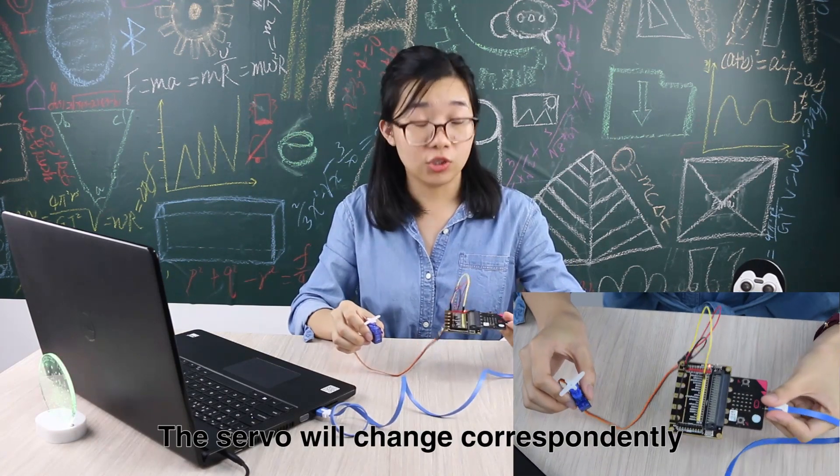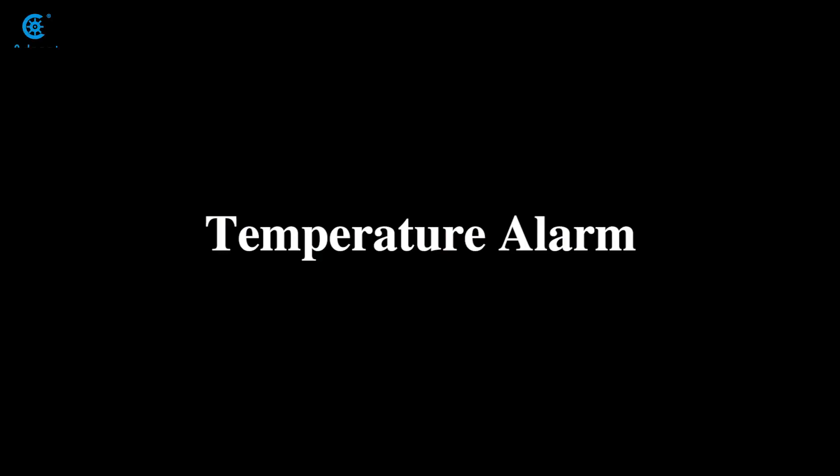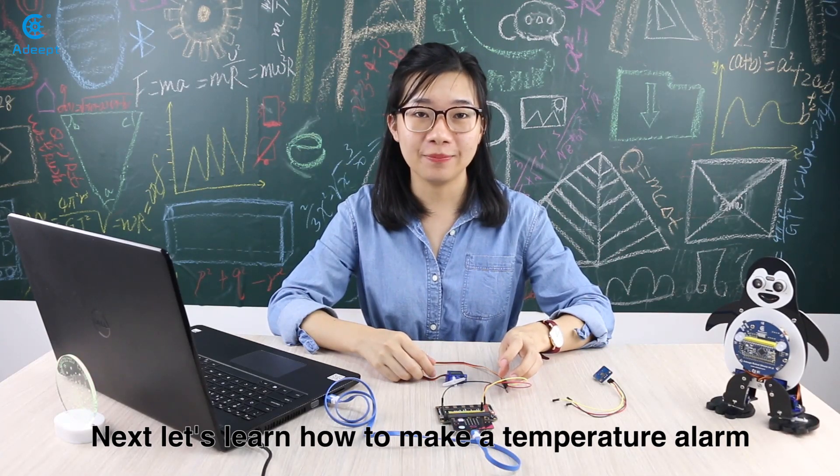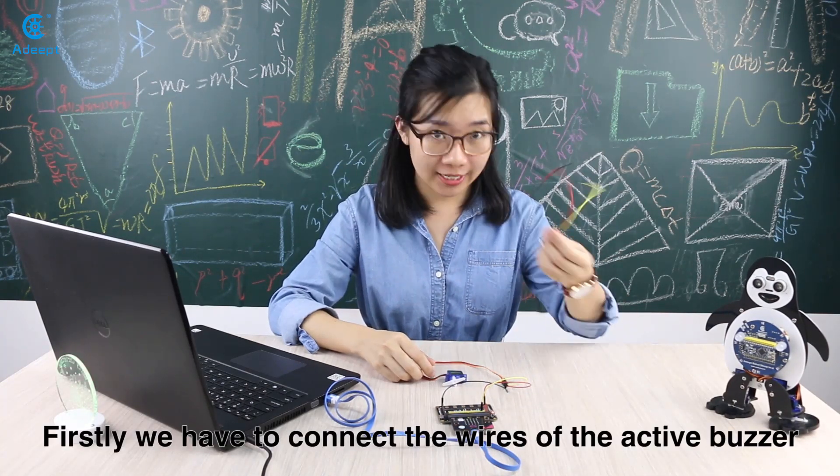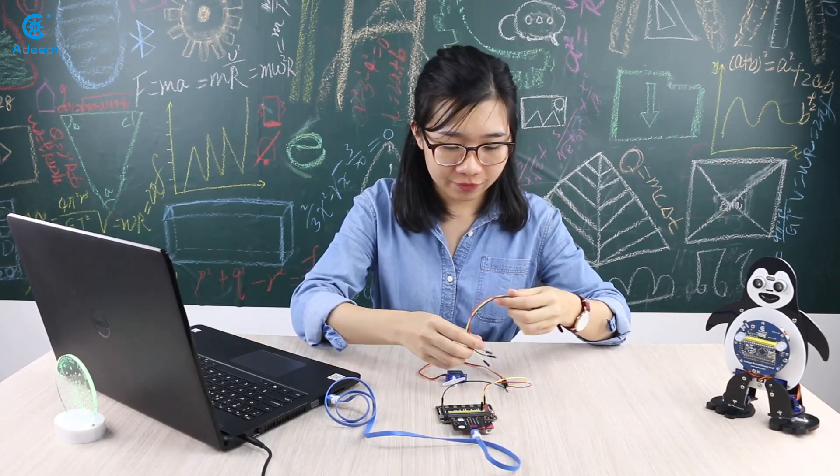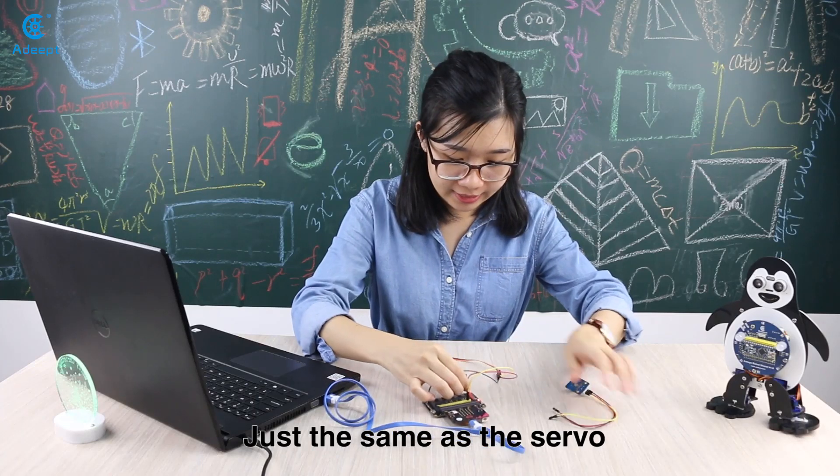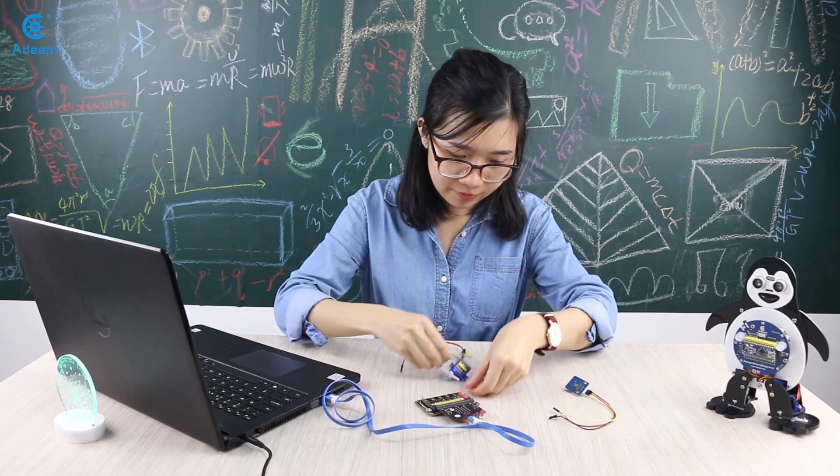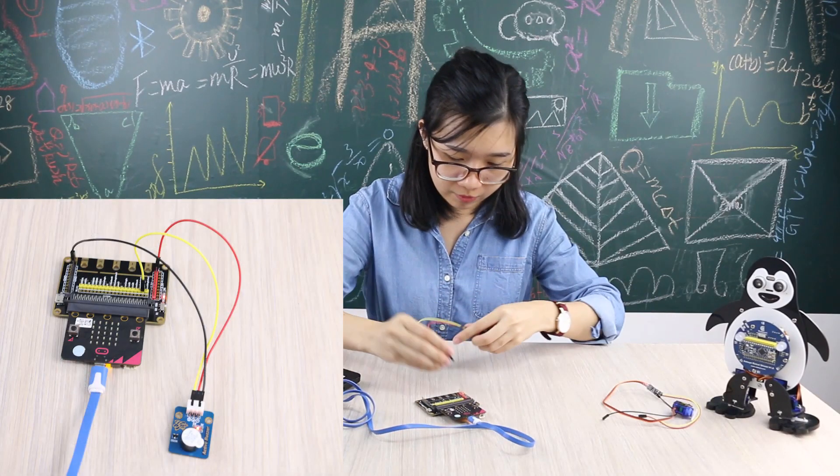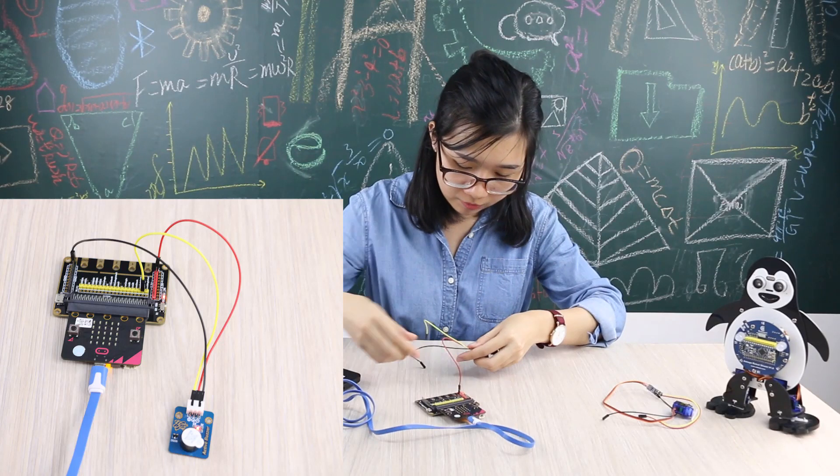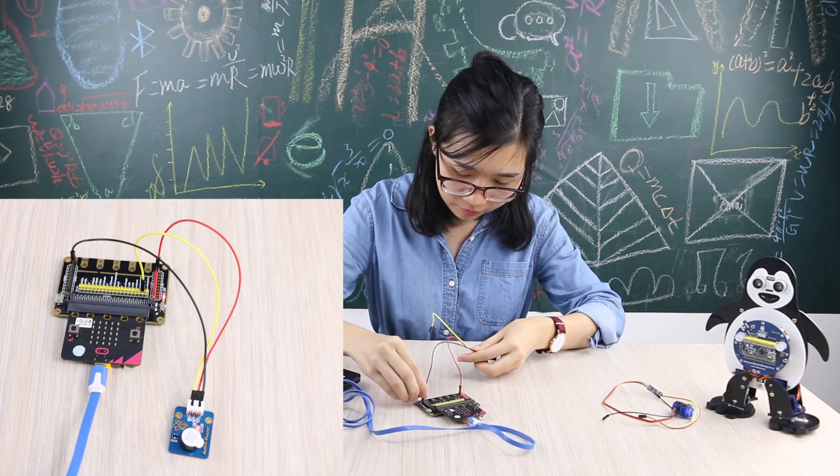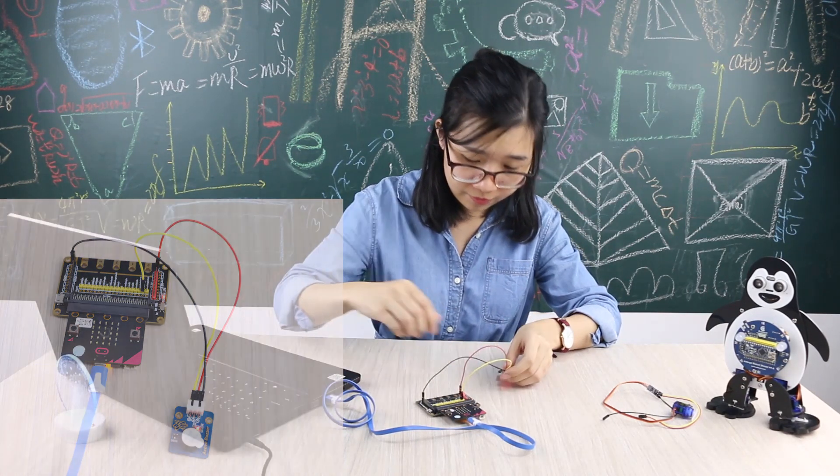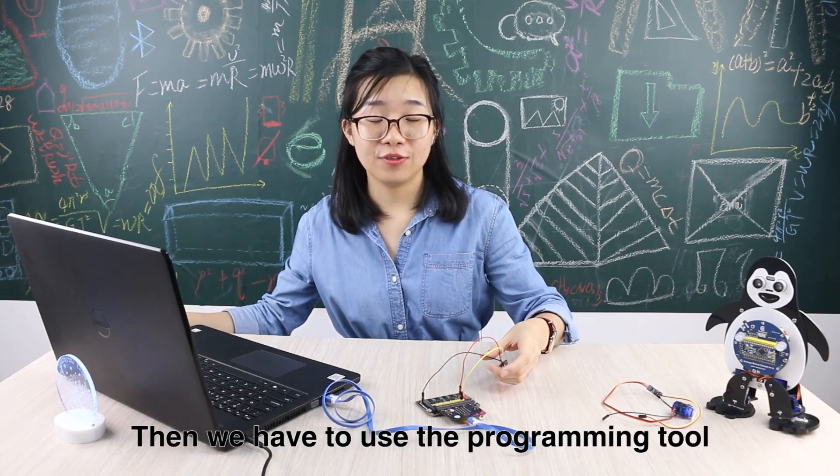Next let's learn how to make a temperature alarm. Firstly we have to connect the wires of the active buzzer, just the same as the servo.